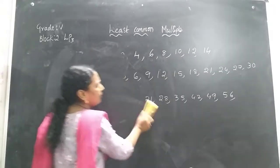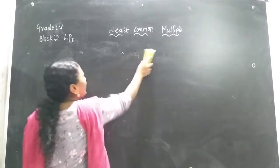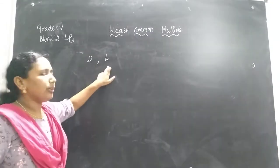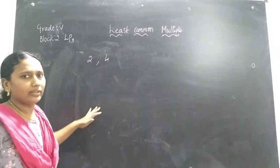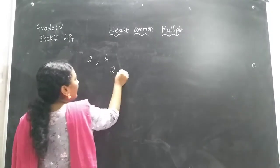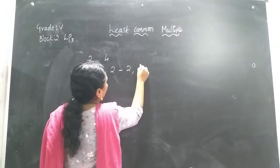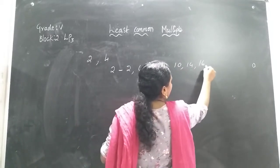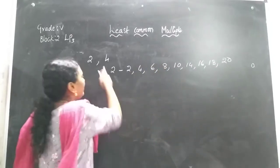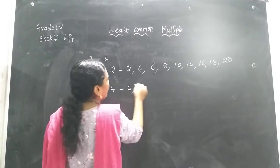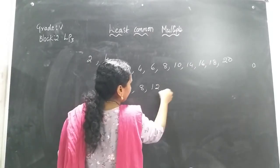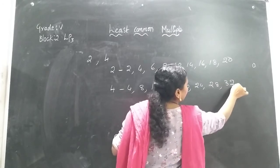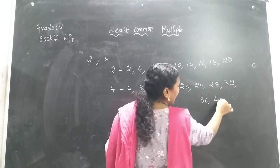We saw for a single number. Now we will see for two numbers at a time. How can I find the multiples for 2 and 4? I have to find the multiples of 2 and 4 and see the common ones. Multiples of 2: 2, 4, 6, 8, 10, 14, 16, 18, 20. Multiples of 4: 4, 8, 12, 16, 20, 24, 28, 32, 36, 40.